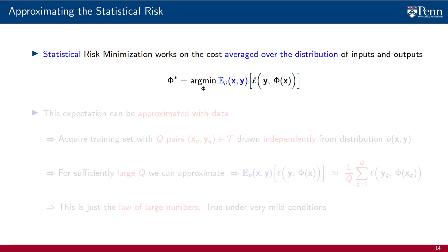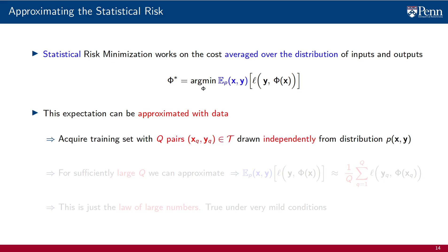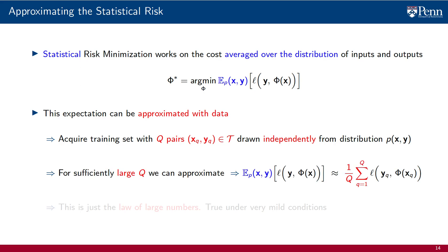Statistical risk minimization works on a point-wise cost L of X, phi of X, averaged over the distribution of input-output pairs — it operates on a statistical cost. The epistemological value of expectations is that they are well approximated by averages. We can therefore approximate the statistical cost with data. To do so, we acquire a training set T containing Q input-output pairs (x_q, y_q), drawn independently from the distribution P_XY.